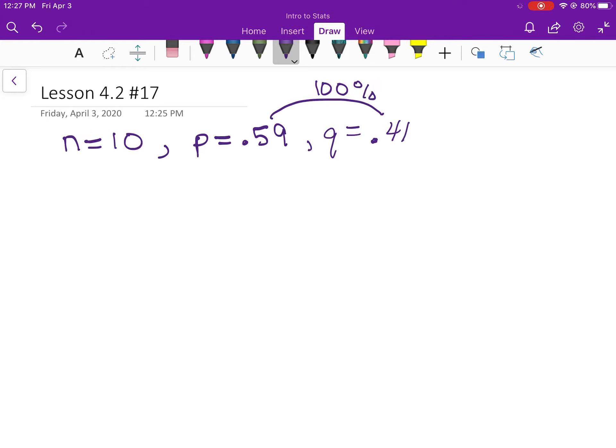Now the formula that we need is nCx times p to the x times q to the n minus x.